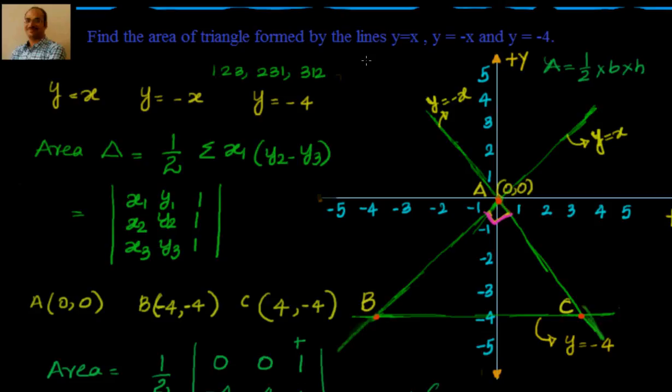The lines can be complicated as 25x plus 45y equal to 125 or 3x minus 4y equal to 12. Whatever may be the line equations, we will apply cross multiplication and we will find out the point of intersection of two lines at a time. They are nothing but the vertices of the triangle which is formed by those three lines.